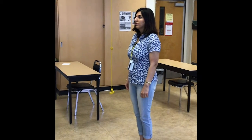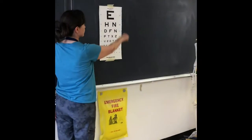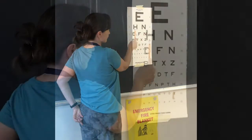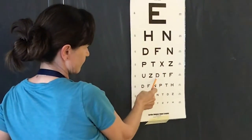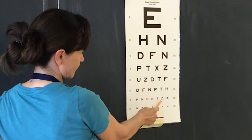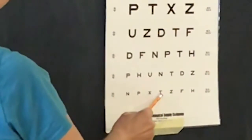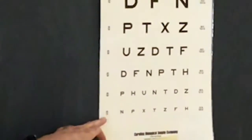Lisa will stay 6 meters away and cover her left eye, and we'll start reading the Snellen chart. She reads: E, H, F, X, D, N, D, P, D, T. Her vision is 20 over 15. Let's try the other eye.